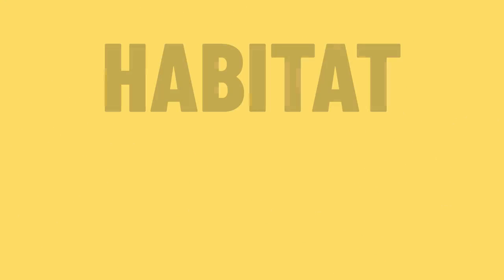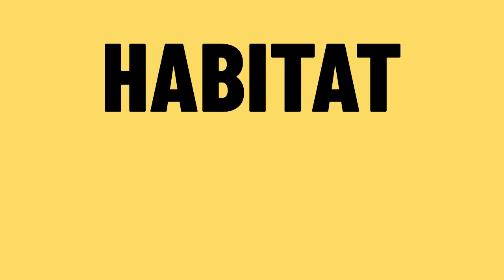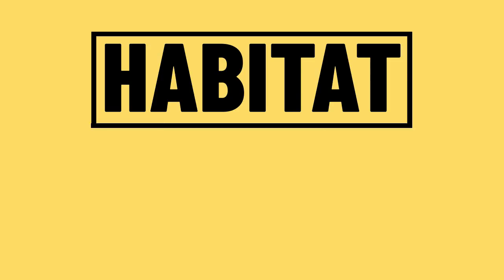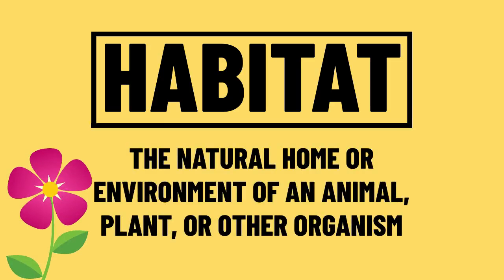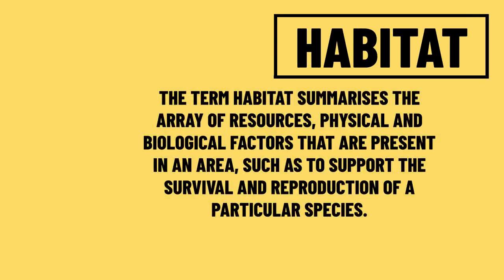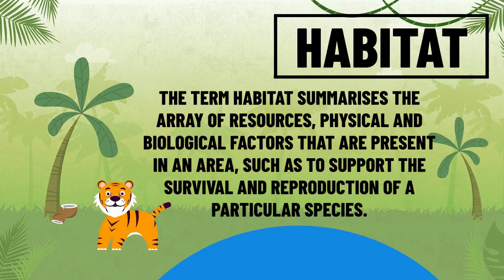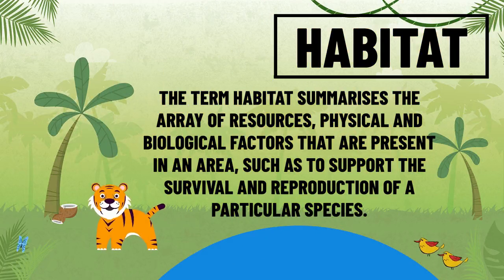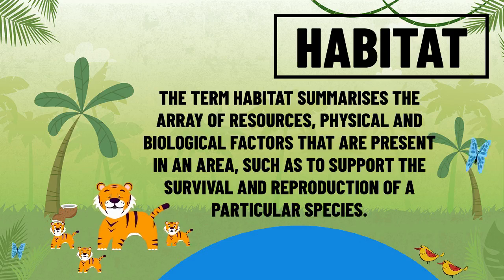Let's begin with the title of this video, the word habitat, and let's look at some definitions. A simple definition we could use is the natural home or environment of an animal, plant or other organism. A more advanced definition would be: the term habitat summarizes the array of resources, physical and biological factors that are present in an area such as to support the survival and reproduction of a particular species.